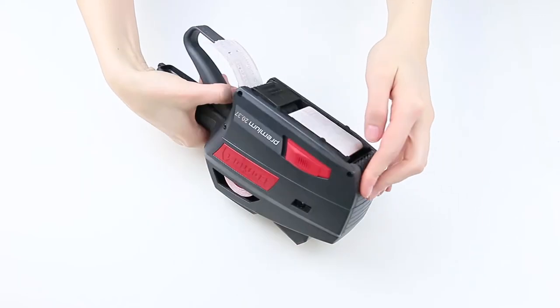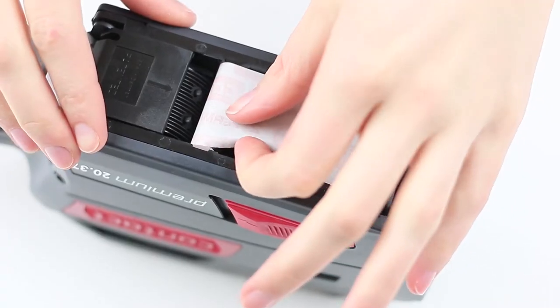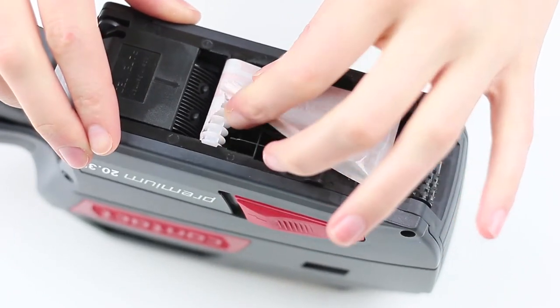First, remove the label roll from the labeler. To do this, you tear off the backing paper in the area of the bottom.